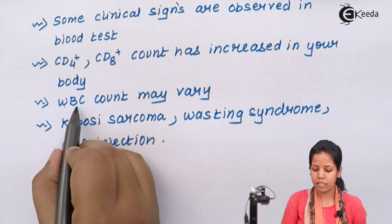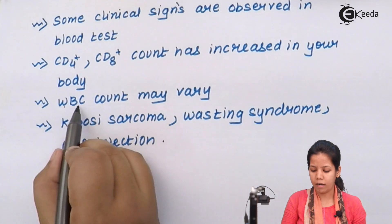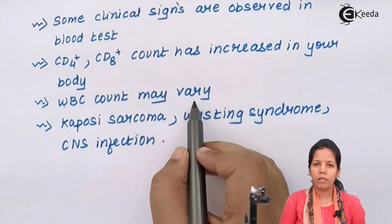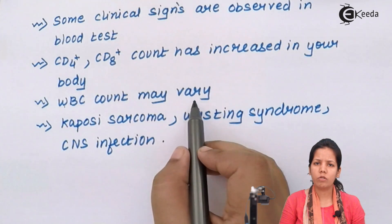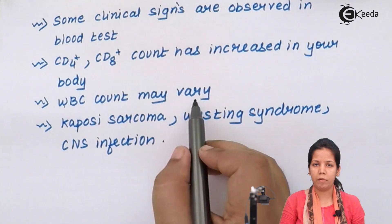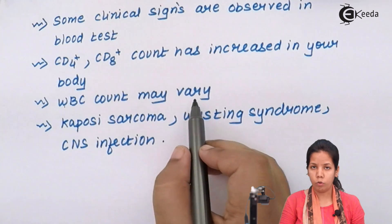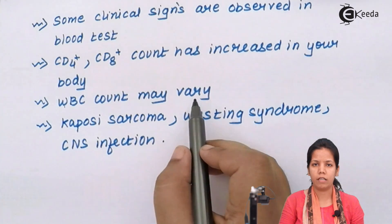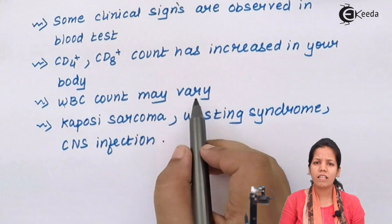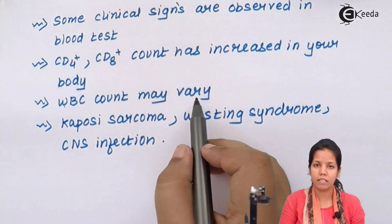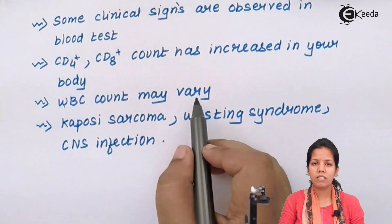The WBC or white blood cell count may also vary. A healthy individual will have their WBC count at an optimum range, but if you are prone to an infection in your body, WBC count will obviously increase — just like if there is an army on your land, the soldiers are going to increase in count. Similarly, when HIV gains entry, there is a change in WBC count.